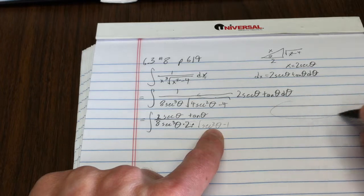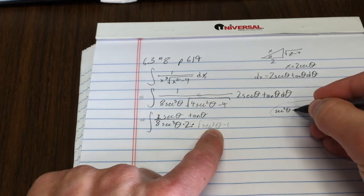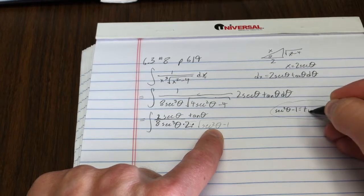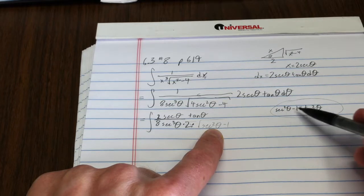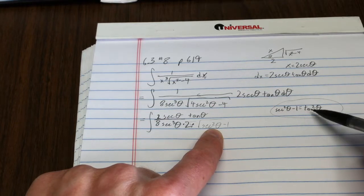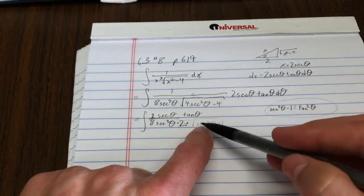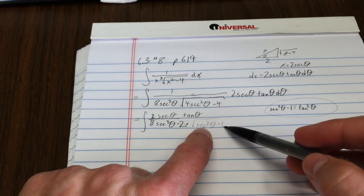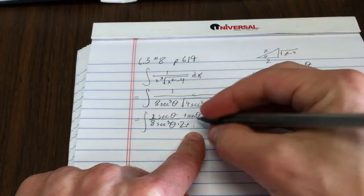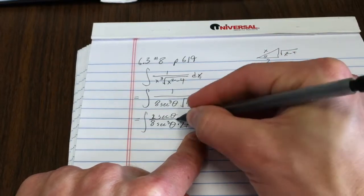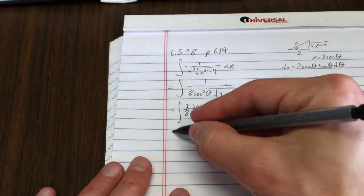I'm using this identity over here, secant squared theta minus 1 equals tan squared theta. Or sometimes you might write it as secant squared theta equals tan squared theta plus 1. So, what I get out is a tan squared theta inside my square root. Since it's a tan squared inside a square root, that means I just get out tan theta d theta. Now this simplifies a whole heck of a lot.